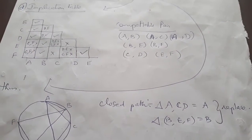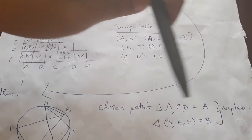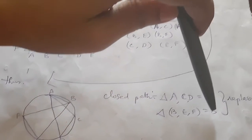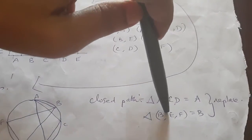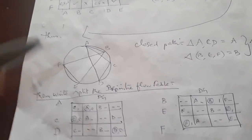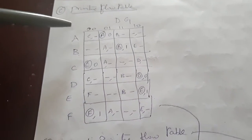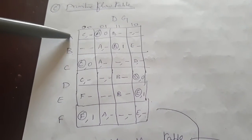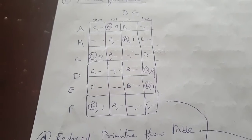The two closed paths can be merged. A, C, D can be merged into a single variable A. B, E, F can be merged into a single variable B. Therefore, wherever C or D appears, replace with A; wherever E or F appears, replace with B. This is the reduced flow table — six states are reduced to two states.